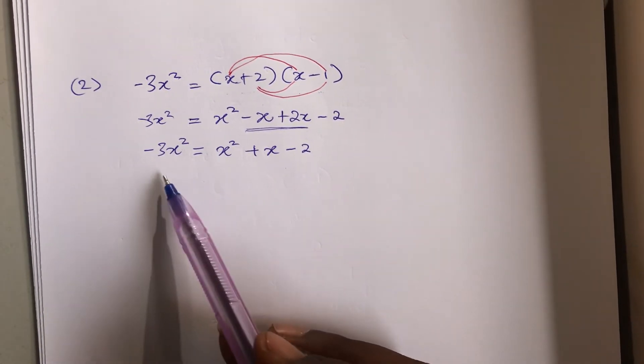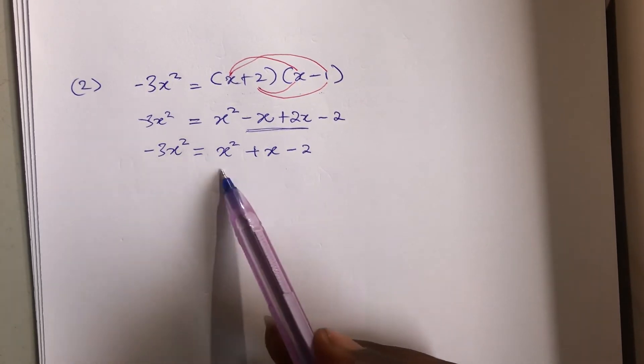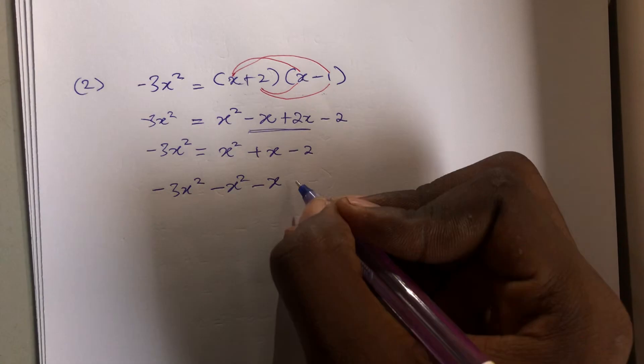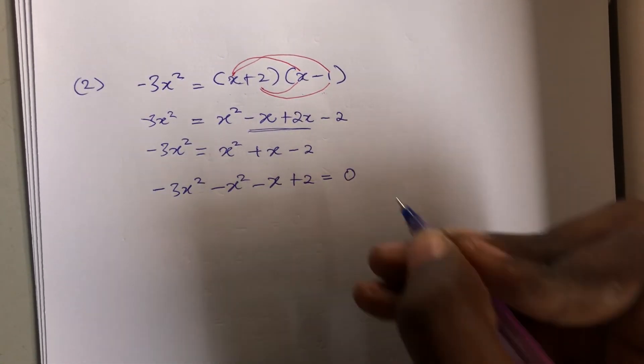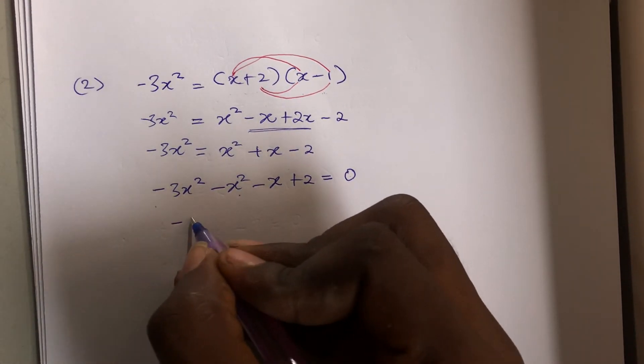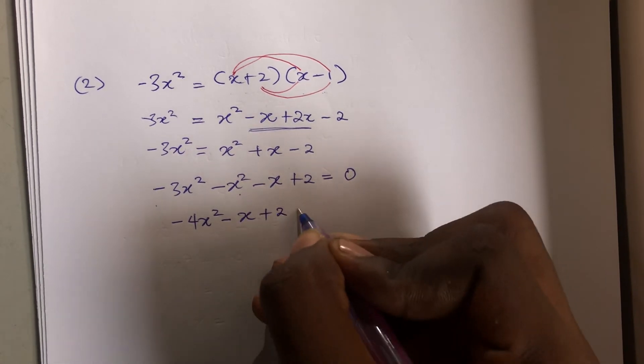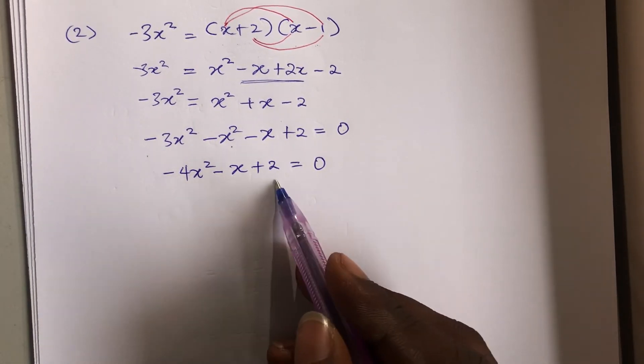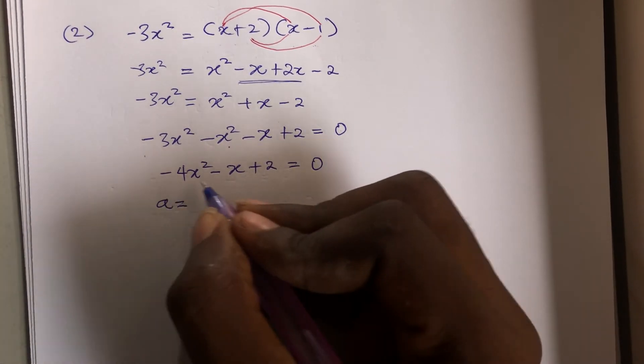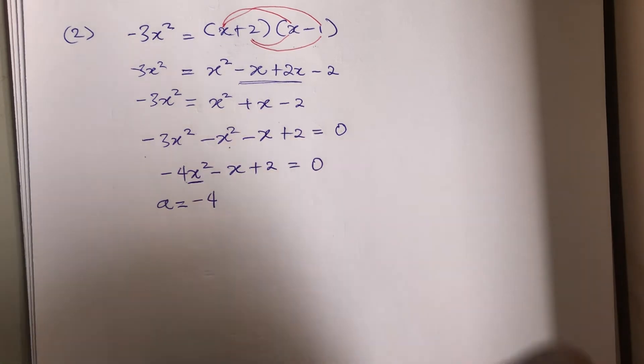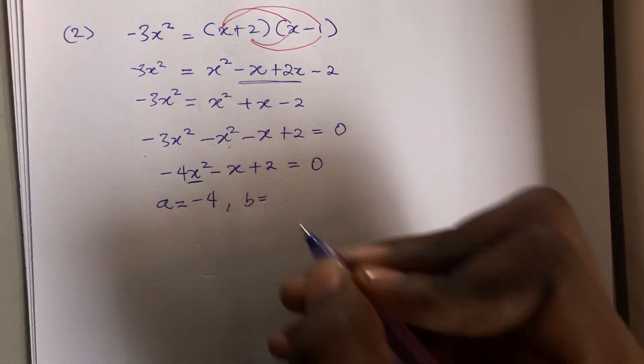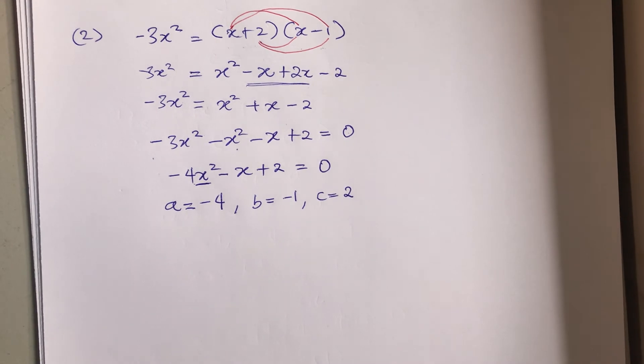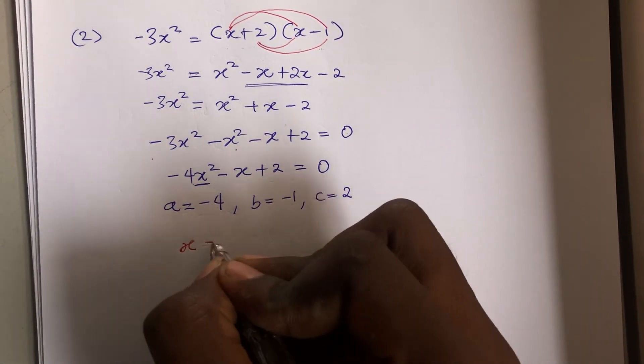Look closely, you will see that these are both like terms so we could just bring all of these to the other side. So we have minus 3x squared minus x squared minus x plus 2, and what we have left on the right hand side is zero. Minus 3x squared minus x squared are like terms, so you have minus 4x squared minus x plus 2 equal to zero. So straight up you can see that you already have a quadratic equation here. In this case a will be minus 4, the coefficient of x squared is minus 4, b the coefficient of x is minus 1, and the constant in this case is 2.